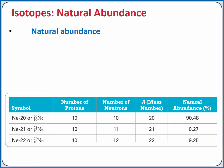If you have a sample of a naturally occurring element, let's say neon, you'll have multiple isotopes in the sample. An isotope's natural abundance is the percentage by mass of that isotope in a naturally occurring sample of the element. For neon, with a naturally occurring sample, you'll have approximately 90.48% of the isotope Neon-20, 0.27% of the isotope Neon-21, and 9.25% of the isotope Neon-22 in the sample.